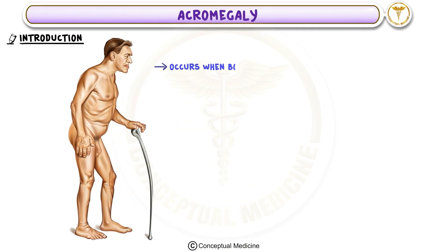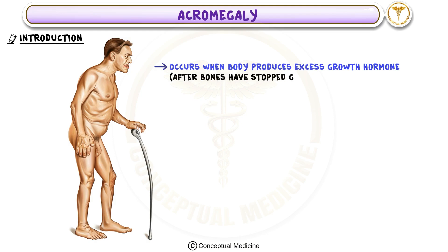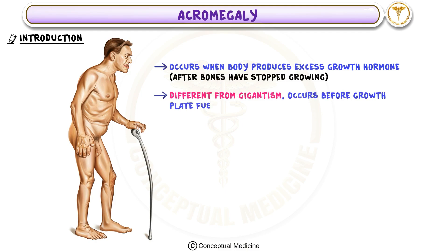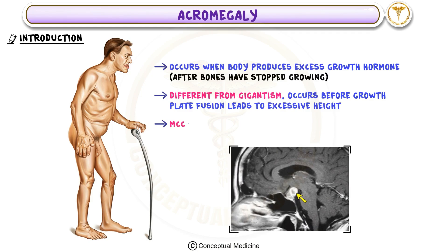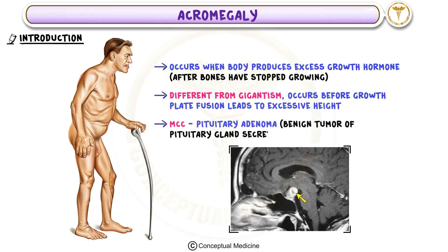Acromegaly is a condition that occurs when the body produces too much growth hormone after the bones have stopped growing. This is different from gigantism, which occurs before growth plate fusion and leads to excessive height. The most common cause is a pituitary adenoma, a benign tumor that secretes excess growth hormone.